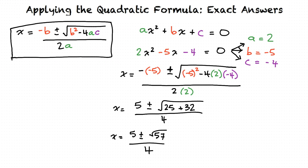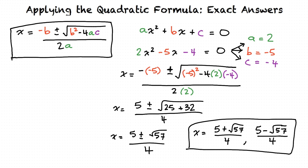We can split apart the positive and negative, or our plus and minus, to show our two answers, which are 5 plus the square root of 57 over 4, and 5 minus the square root of 57 over 4. These are exact answers, so we will leave them as they are.